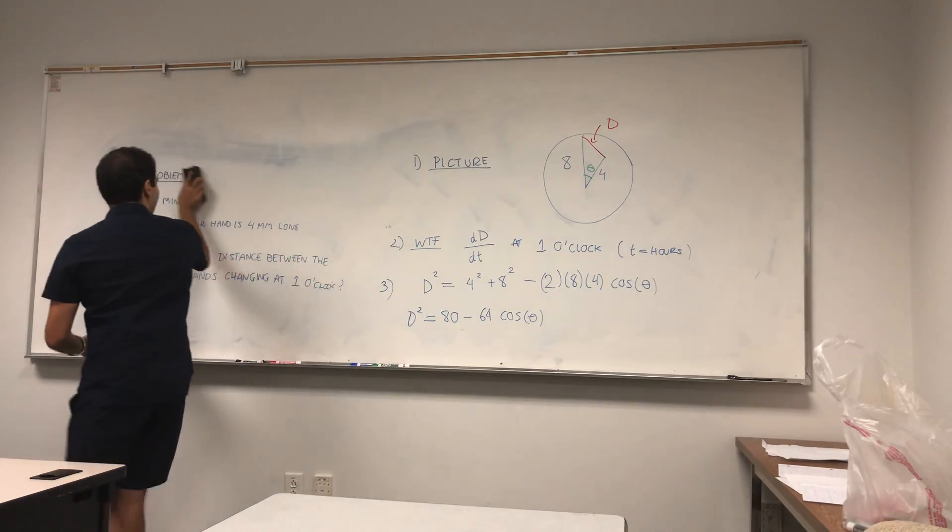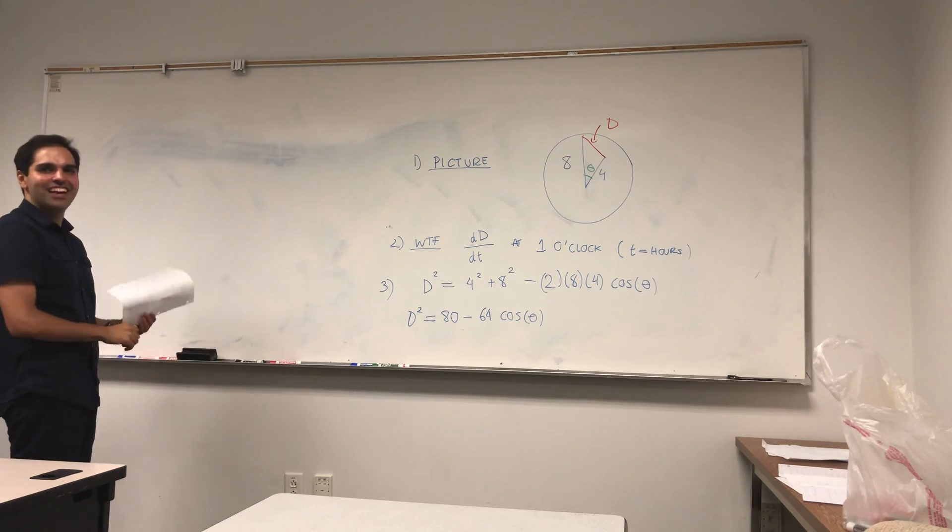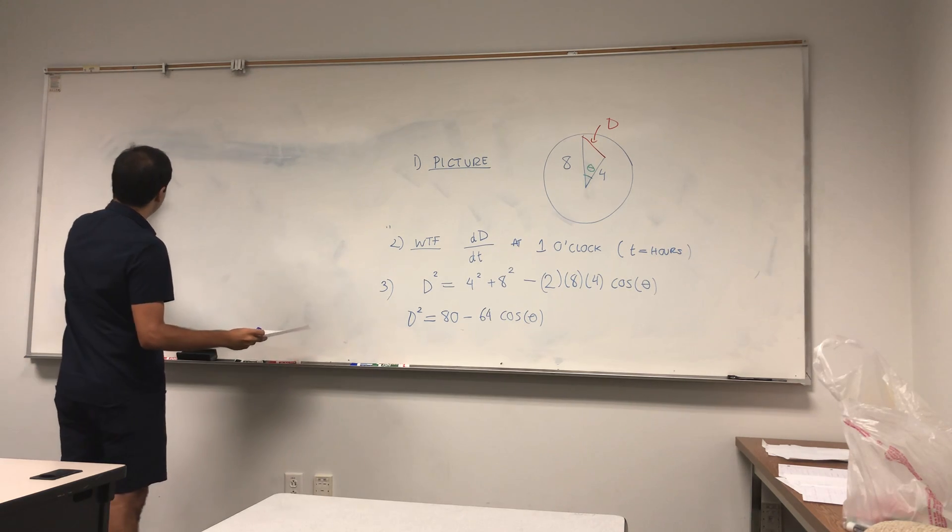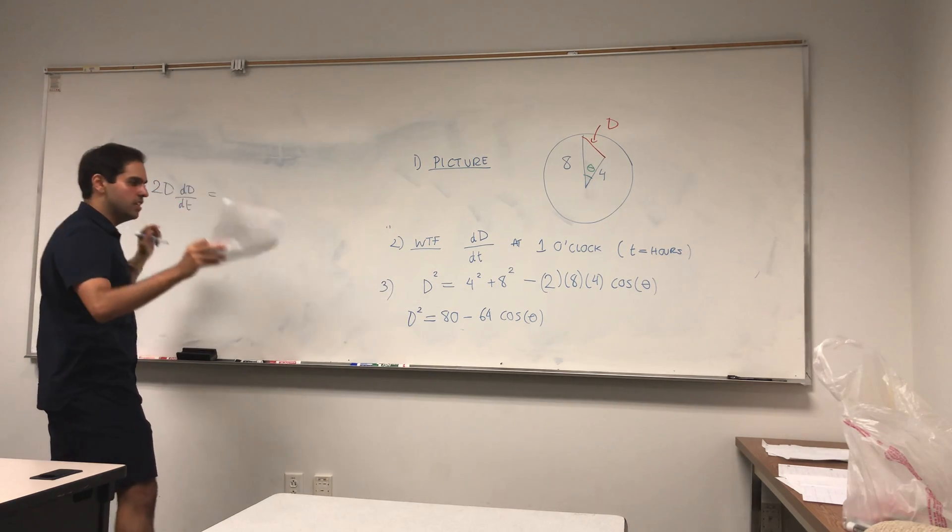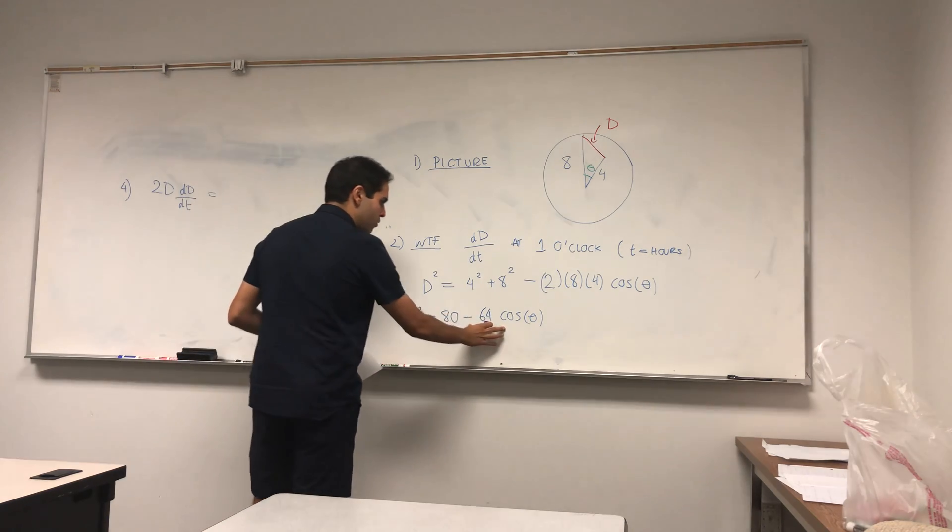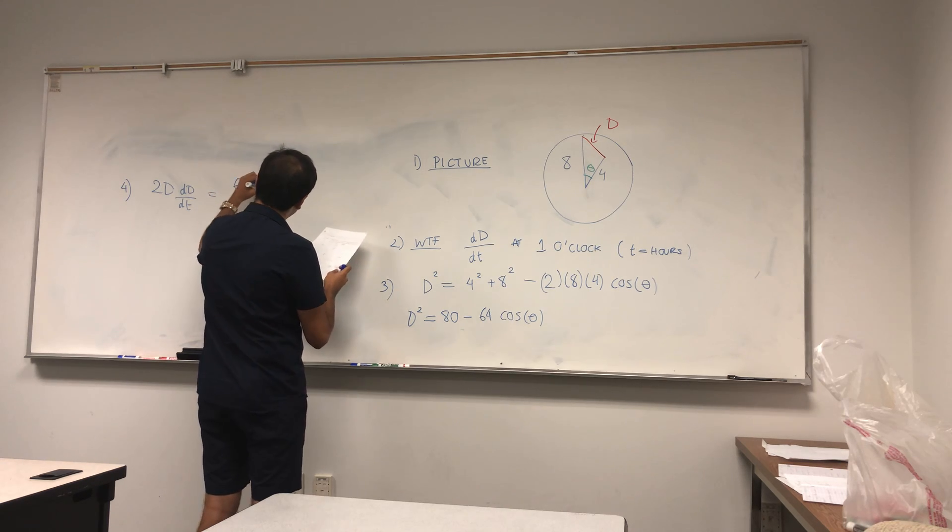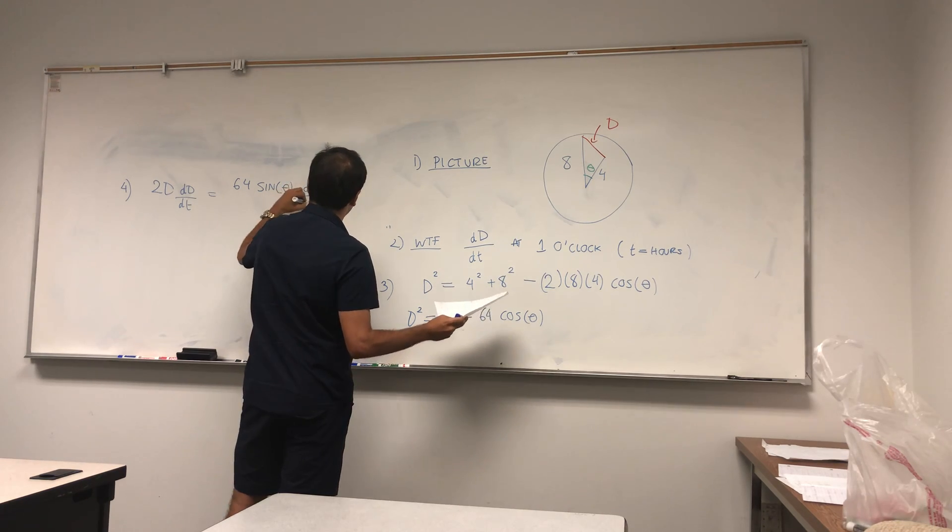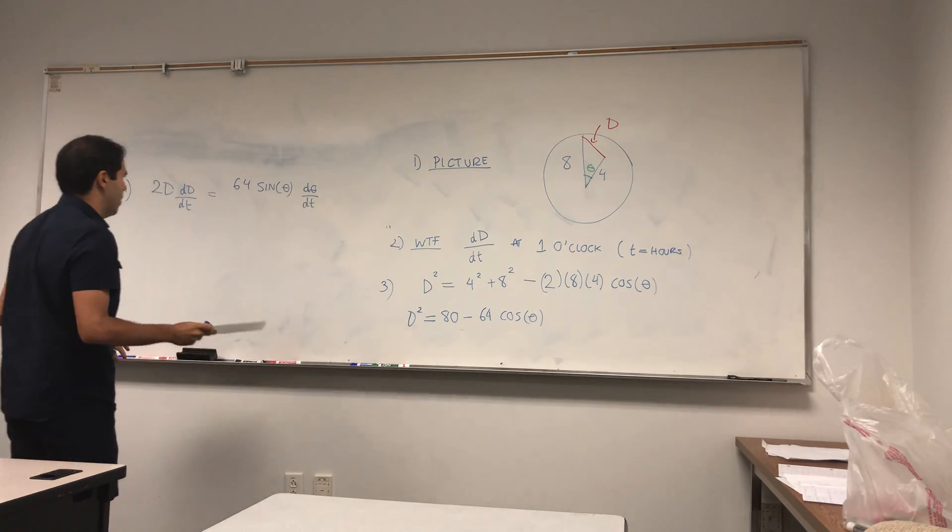But that's not what we want. We want dD/dt. So what we have to do is differentiate this, and to differentiate this implicit function we have to use the chain rule. Derivative of D squared is 2D times the derivative of D, so dD/dt. Derivative of 80 disappears, and then we have derivative of cosine is minus sine, so 64 sine of theta, but remember theta also depends on time because the angle isn't always whatever it is, it changes as well.